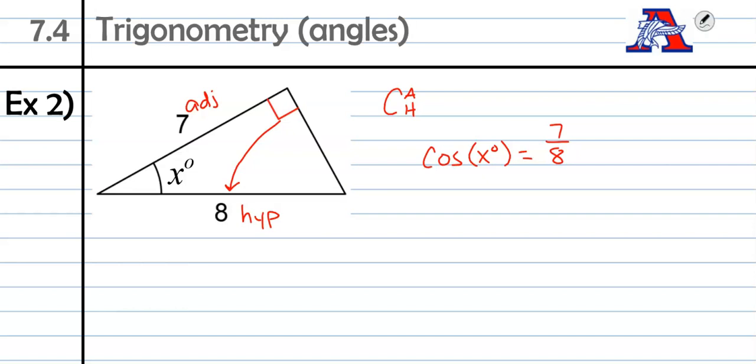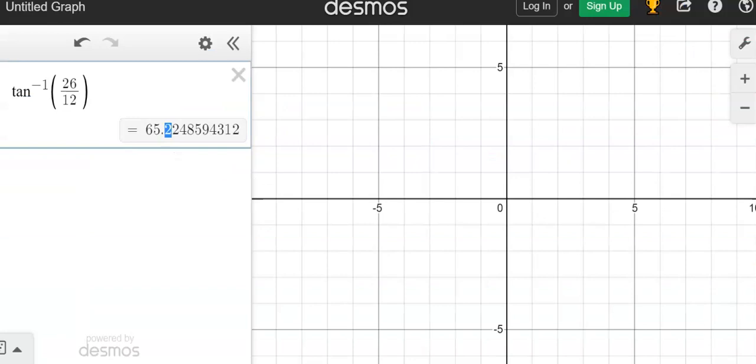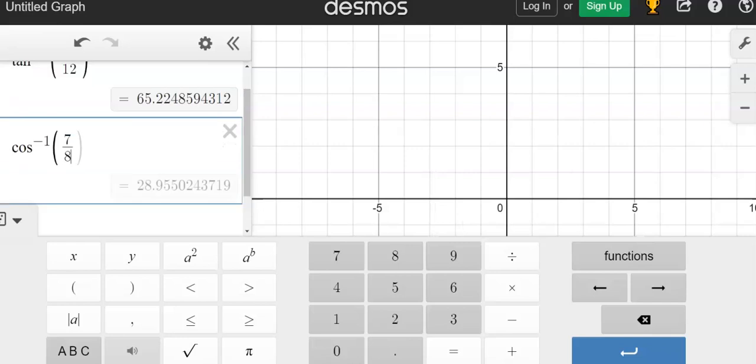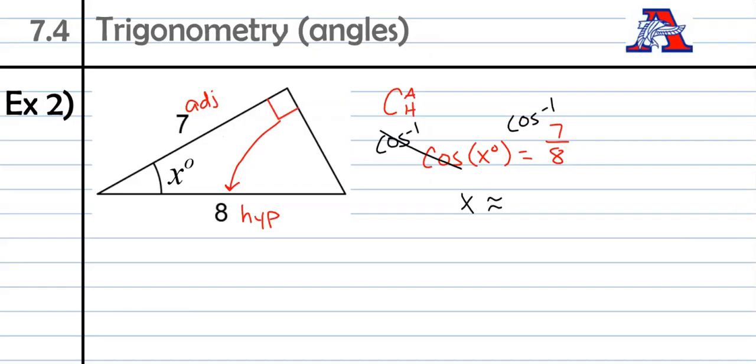And then our last step, super simple. Take the inverse cosine of both sides, cosine to the negative 1. That will eliminate your cosines, x is by itself. Grab your calculator. Inverse cosine, 7 over 8. So functions, inverse cosine, 7 over 8. And we get 28.9, so we're going to round that one up to 29. 29 degrees, approximately. And done.